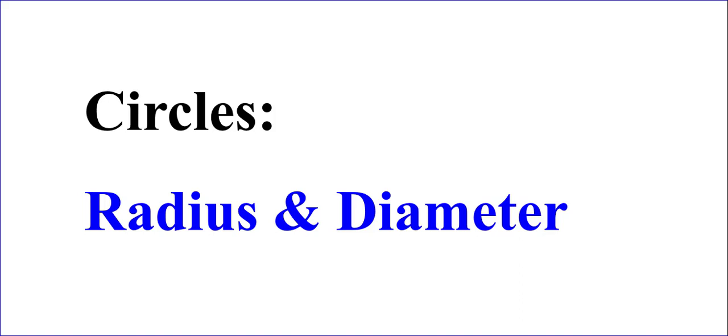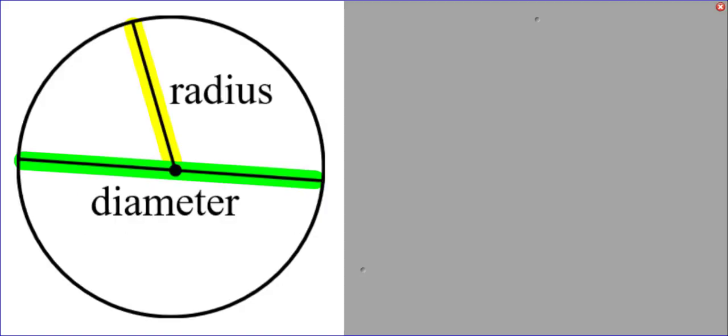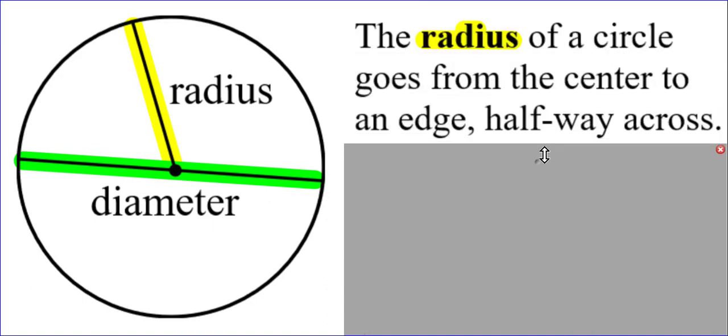Circles, radius and diameter. Let's talk about the difference between these two things. The radius of a circle goes from the center to an edge, halfway across.